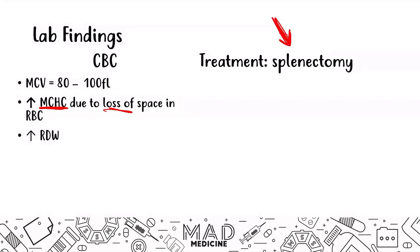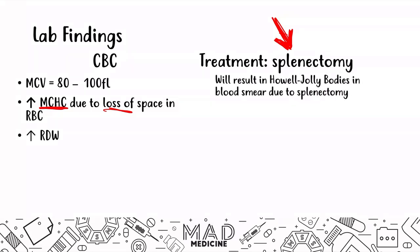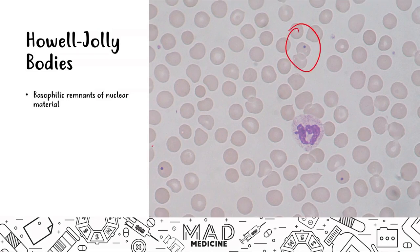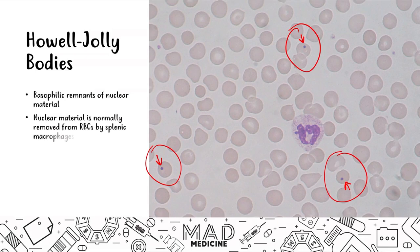What happens when you get rid of the spleen? Patients who don't have a spleen are going to be more susceptible to encapsulated organisms. Another thing you need to know is that this is going to result in Howell-Jolly bodies occurring in the blood smear. Howell-Jolly bodies are basophilic remnants of nuclear material found in red blood cells — you can see a little tiny circular blue dot in the circled red blood cells.